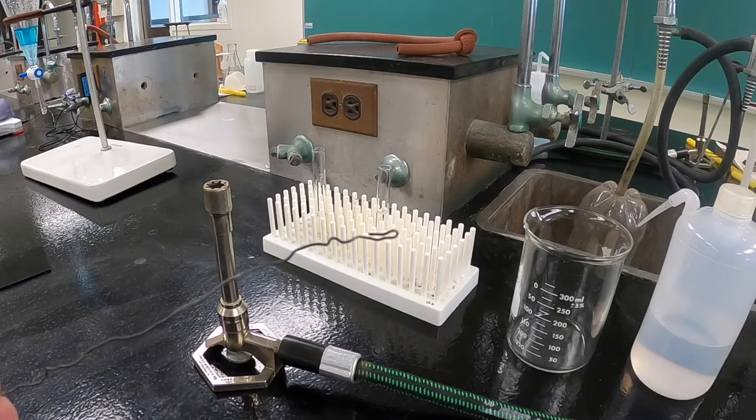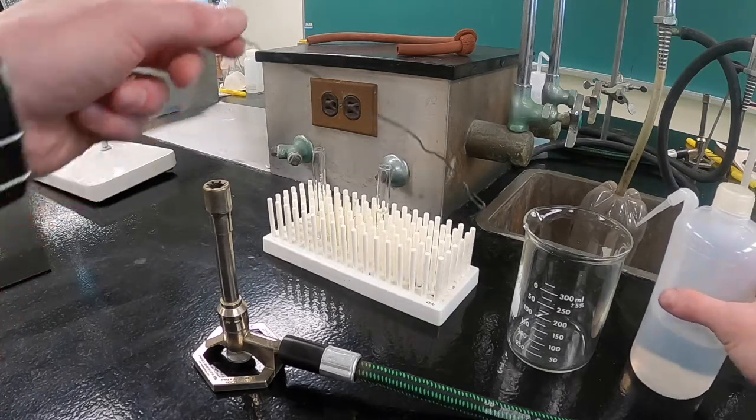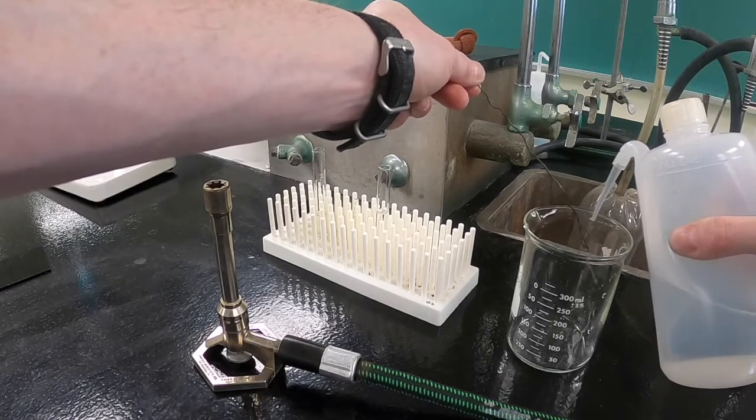The first step in a flame test is to take your metal wire and rinse it with distilled water to make sure that any contaminants have been removed.